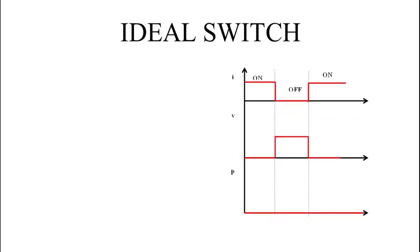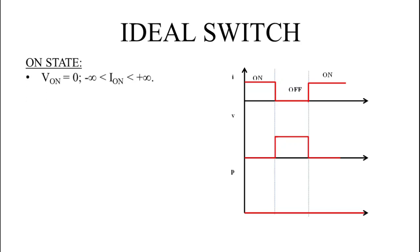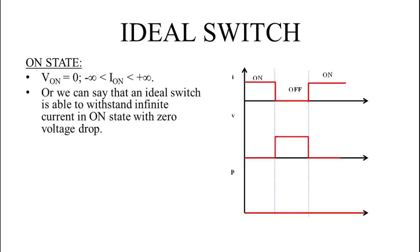First we will study the ideal switch in on and off state. During the on state, the switch connects the conducting path in the electric circuit. The on-state voltage drop across the ideal switch, V_on, is zero, and the on-state current has limits from minus infinity to plus infinity. This means an ideal switch is able to withstand infinite current with zero voltage drop across it.